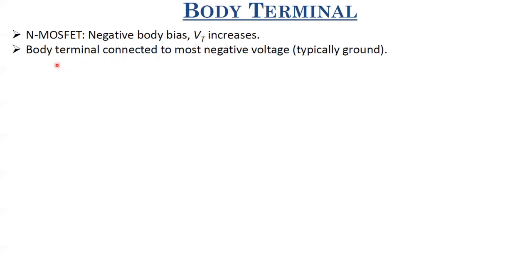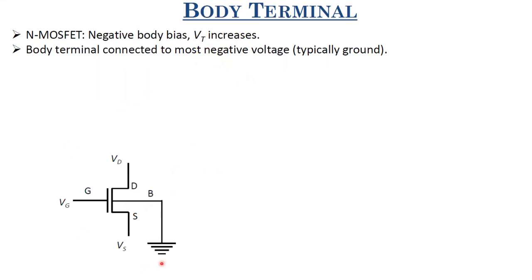In N-MOSFETs, the body terminal is connected to the most negative voltage — typically ground — so that the channel-source and channel-drain junctions are not forward biased. Ground is the most negative voltage on a chip since we typically don't have negative supply. Whenever the body terminal is not shown in a circuit, assume it is connected to ground for N-MOSFET.